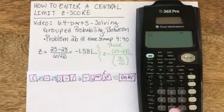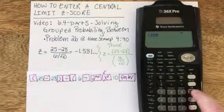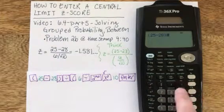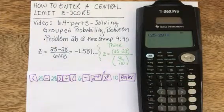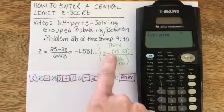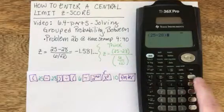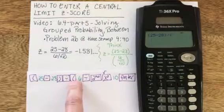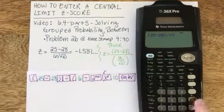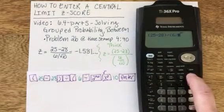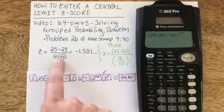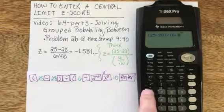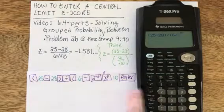Open parenthesis, 25 minus 28, end parenthesis — just to the right of the left parenthesis — and now I can divide for my denominator. Starting with another open parenthesis to begin the denominator, I've got 6 divided by, and I need the square root of 10. You'll notice the square root is in light blue above X squared.